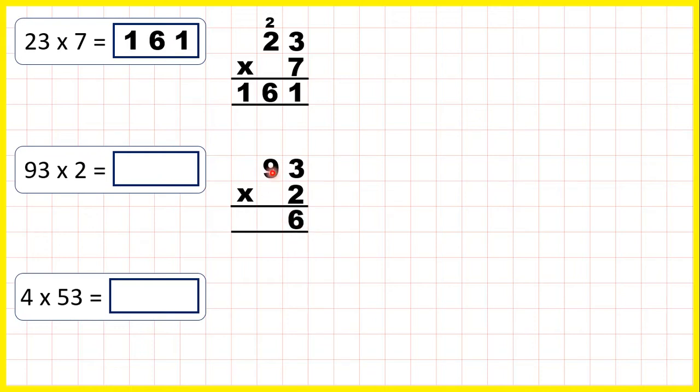Now 9 times 2 is 18, and we don't have anything to add, so we can just write 18. So 93 times 2 is 186.